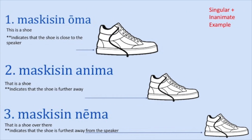In this example we see demonstratives for singular inanimate nouns. Number one shows that the shoe is closest to the speaker: Maskisin oma. Number two shows that it's a little bit further away: Maskisin anima. And number three shows that it's a lot further away from the speaker: Maskisin anima.